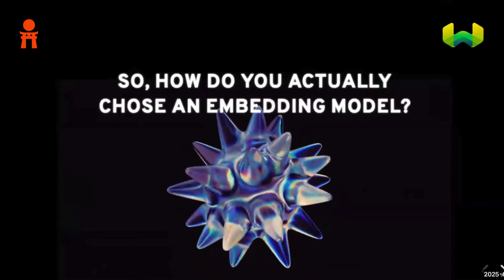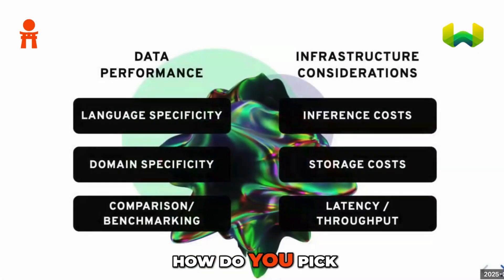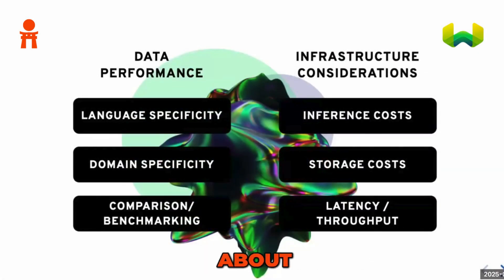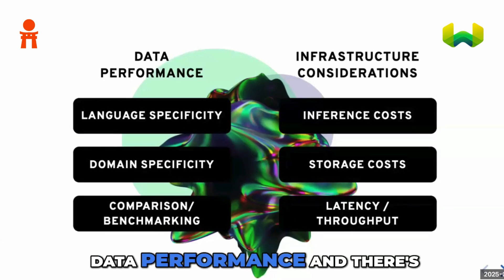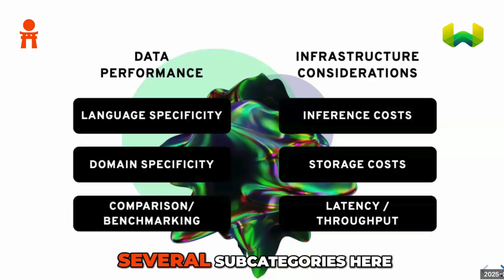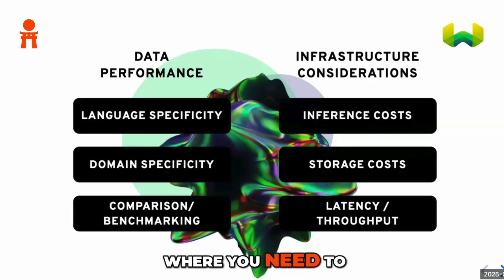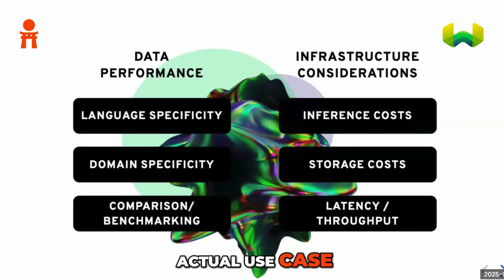So, how do you pick? There are two main things that you should think about here. The first one is data performance, and there are several subcategories where you need to correspond it to your actual use case that you're building.